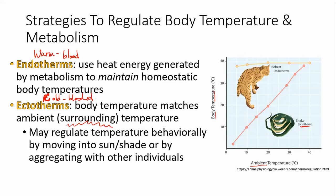An ectotherm like a snake does not maintain its body temperature at a certain level — its body temperature varies directly with the outside temperature. They don't put extra effort into maintaining a body temperature. Endotherms burn glucose to produce heat and actively maintain their body temperature, which takes a lot of energy. The advantage is they can survive in a larger range of environmental conditions. You see polar bears in the far north where it's super cold — you don't see many lizards up there.